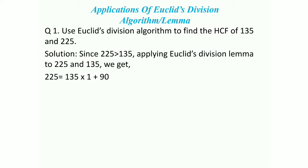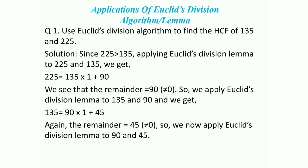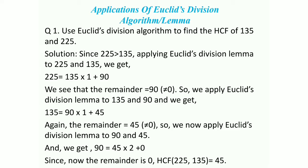Since 225 is greater than 135, we apply Euclid's Division Lemma to 225 and 135. Dividing 225 by 135 gives quotient 1 and remainder 90, so 225 equals 135 into 1 plus 90. The remainder is not 0, so we apply the lemma again to 135 and 90, getting 135 equals 90 into 1 plus 45. The remainder is still not 0, so we apply it once more to 90 and 45: 90 equals 45 into 2 plus 0. Since the remainder is 0, the HCF of 225 and 135 is 45.